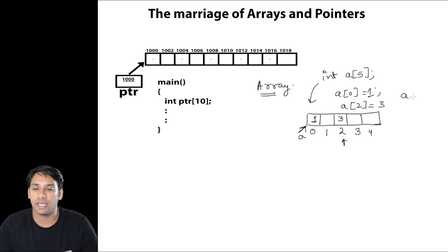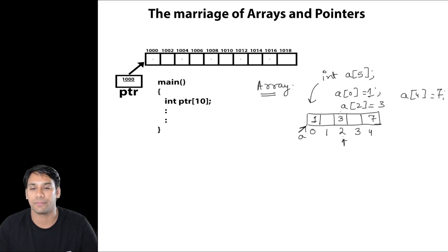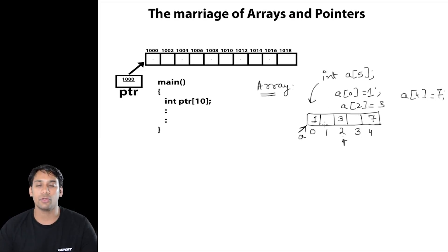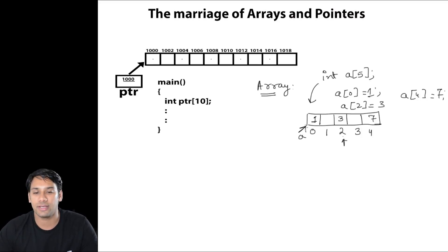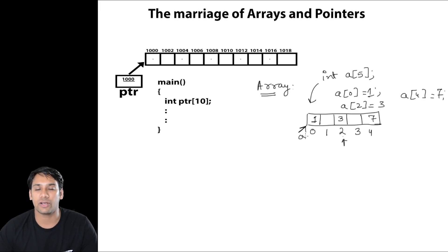When I say a[4] = 7, that means I am going to store 7 into index location 4. If you look closely at this diagram, in most books they have shown 'a' with some kind of arrow pointing to this array.